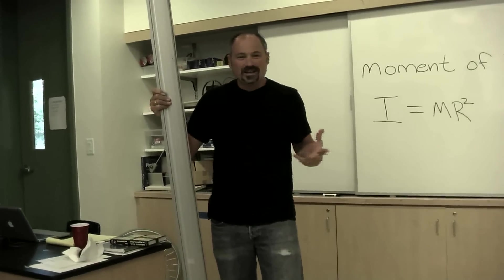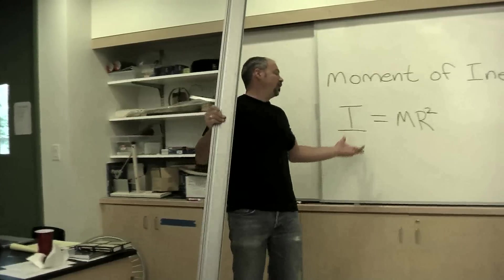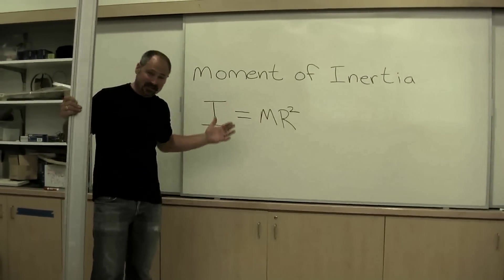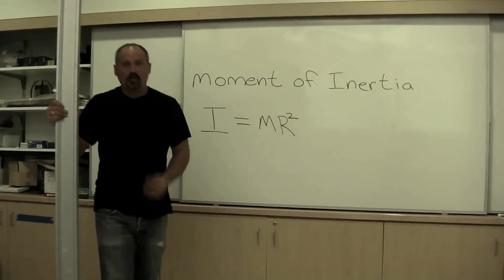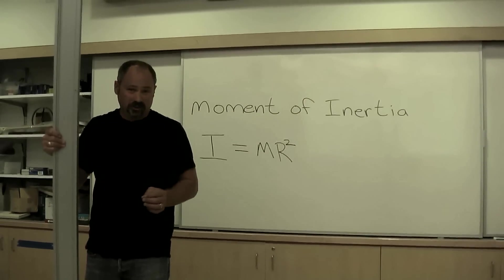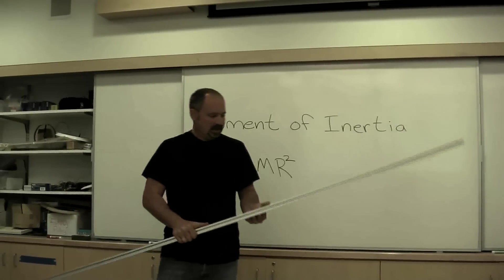What is moment of inertia? Well, you've all seen the formula. It's equal to the mass times the distance the mass is from the rotation axis squared. But what is it? Well, it's the inertia for rotation.